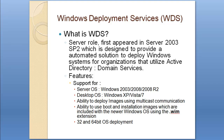I'm not going to explain what a multicast connection is in this video — you can look it up or if you've done some networking you should already know. WDS also provides support for boot and installation images included with newer operating systems using the .wim extension. You'll understand what this means later when I demonstrate how to deploy Windows 7. It also provides support for 32-bit and 64-bit OS deployment.